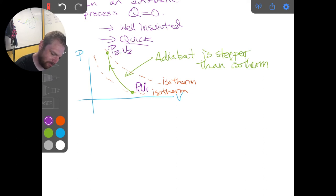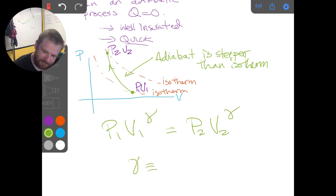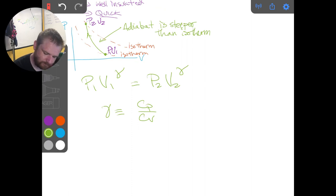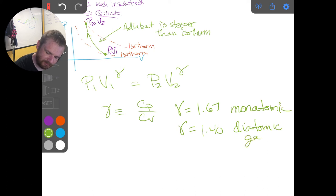Where gamma is defined to be the ratio of CP over CV, and yeah, I will go ahead and leave that there. We have values for monatomic and diatomic gases that are on your equation sheet. We have 1.67 is a monatomic value for gamma, and gamma is 1.40 for diatomic gas.